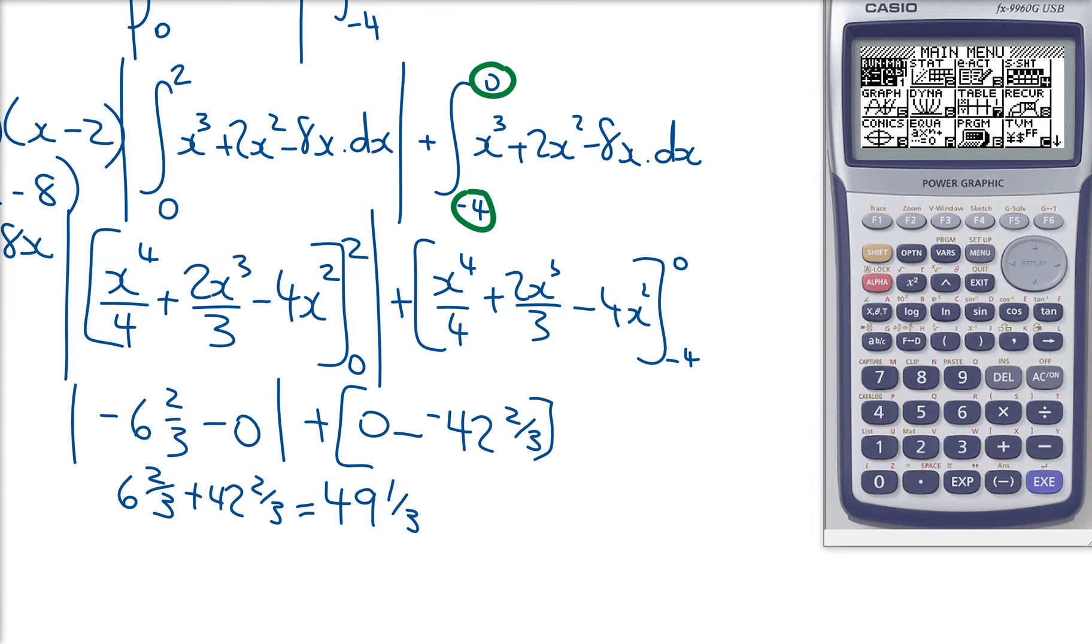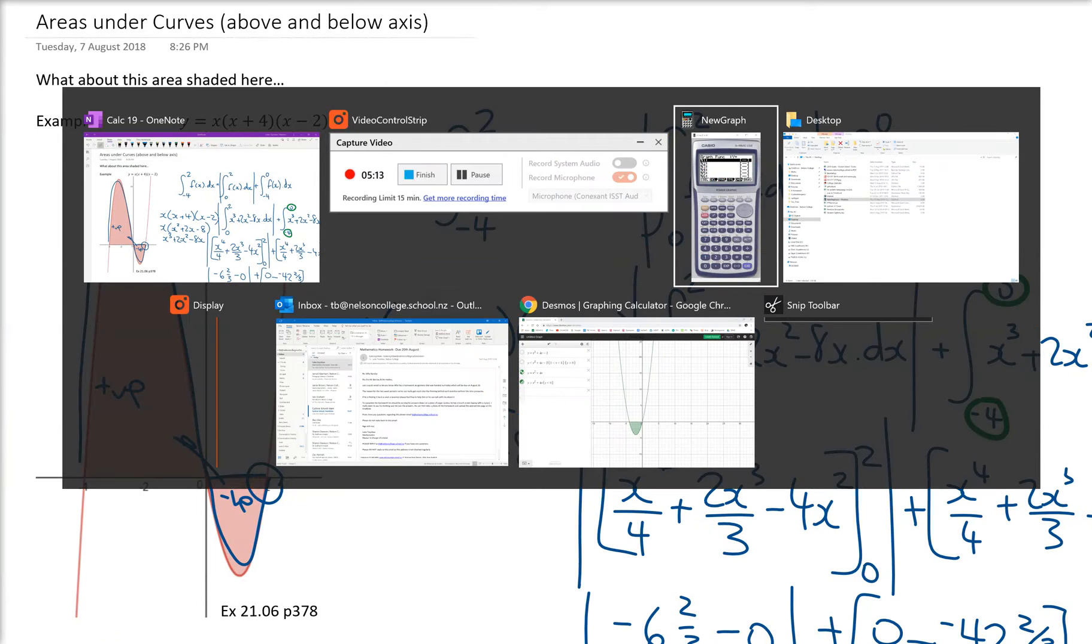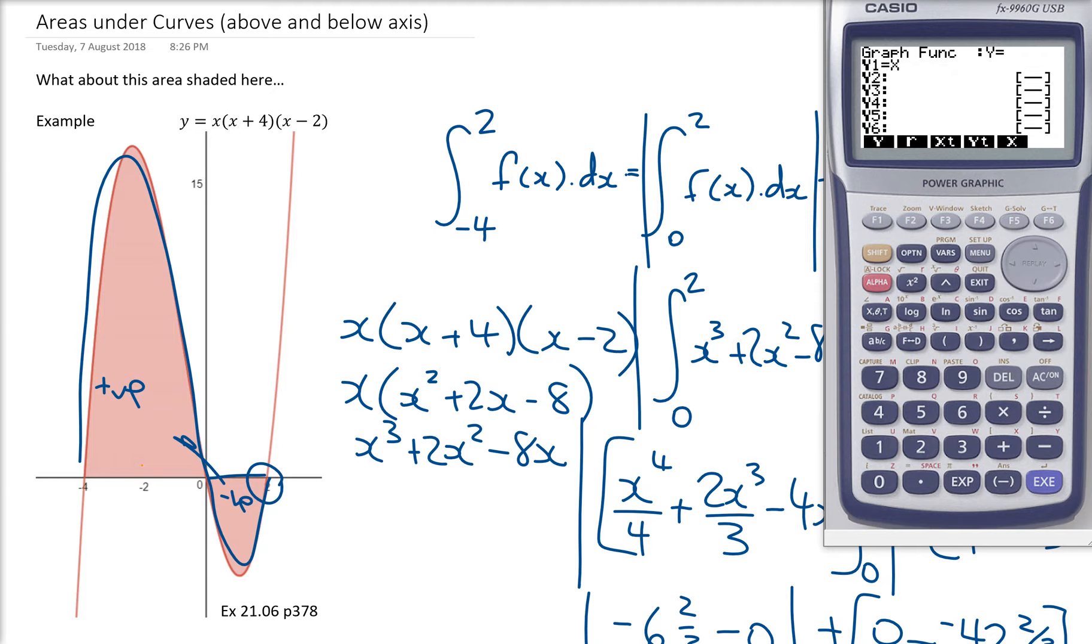So if I'm on my calculator here trying to do this question, I'm going through to the graph function. I'm going back to what the actual equation is, which is x into x plus 4 times x minus 2. Get another bracket in there. Does that look like my graph? No, that's not right. What have I done wrong there? I need to make that as x plus 4.